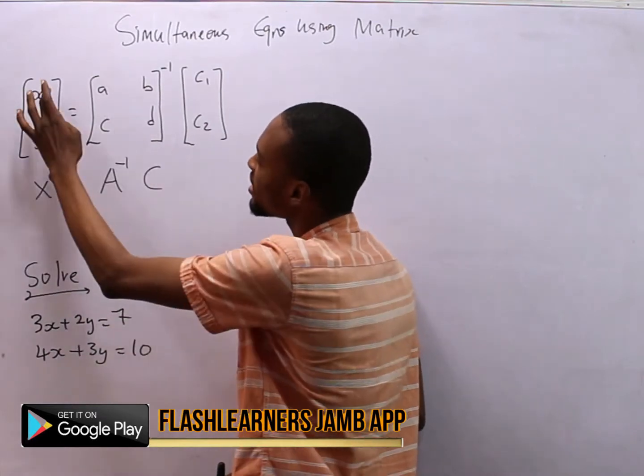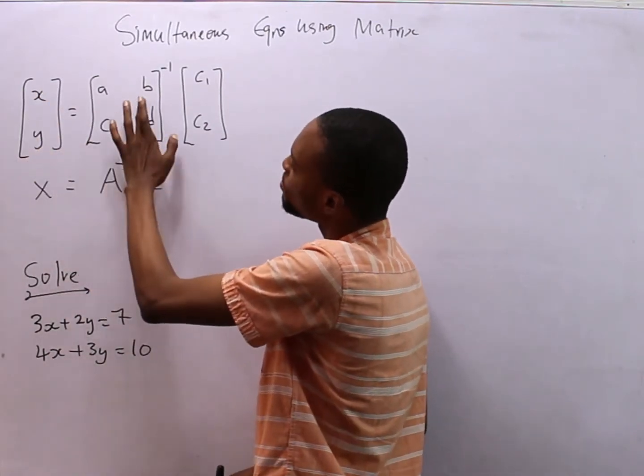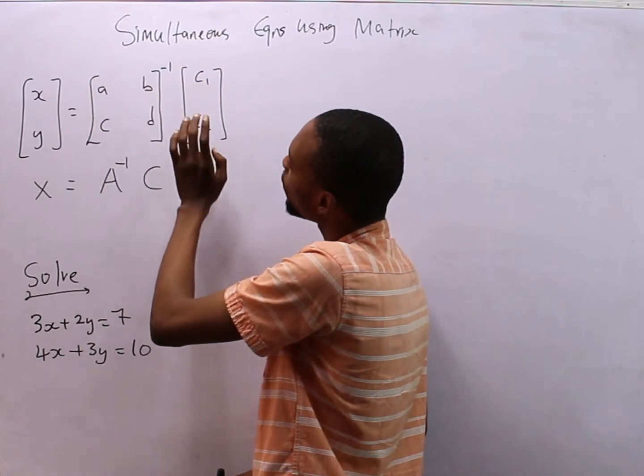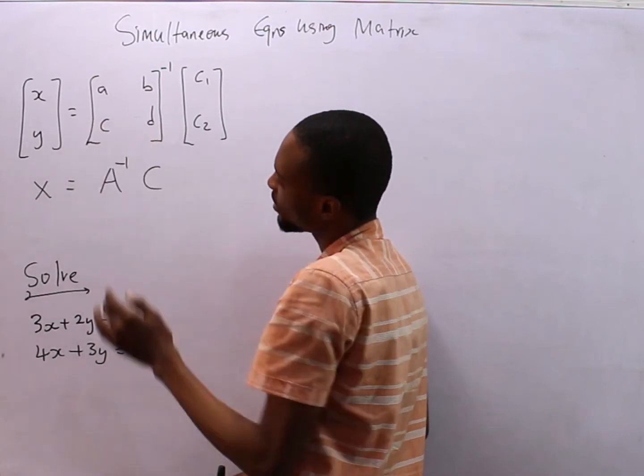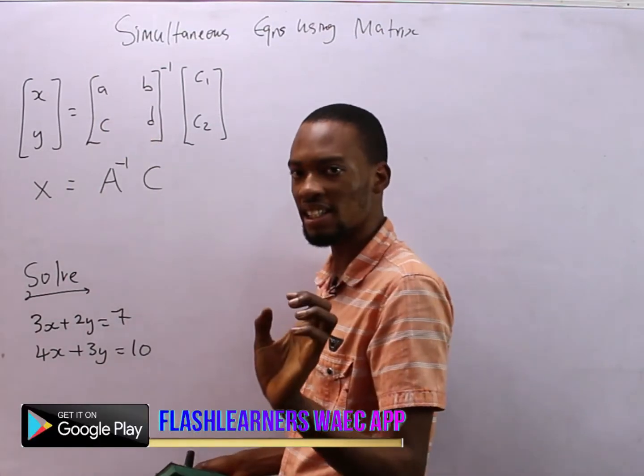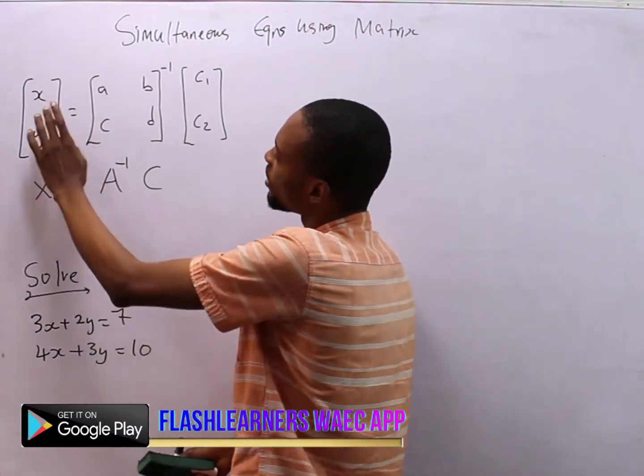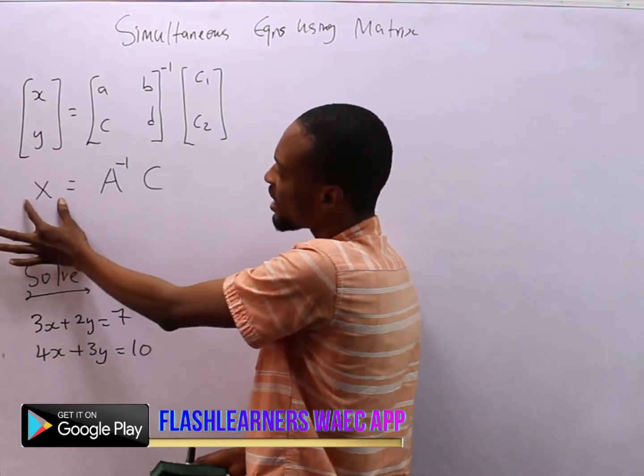Where this is x and y, this is a, b, c, d, and this is c1 and c2. And this is A inverse. Also looking at this, in this form x, y is the same thing as X.